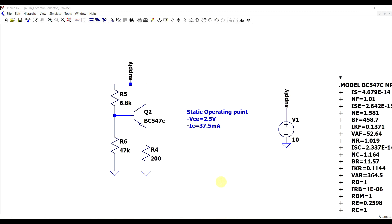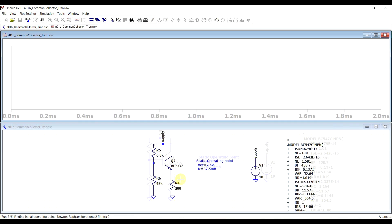If we now come back to the simulator and change the components a bit for our new static operating point, I changed the upper resistor to 6.8 kiloohms. We can first check that the new values are okay. If I run the simulator, we can see our collector current at about 37 milliamps.